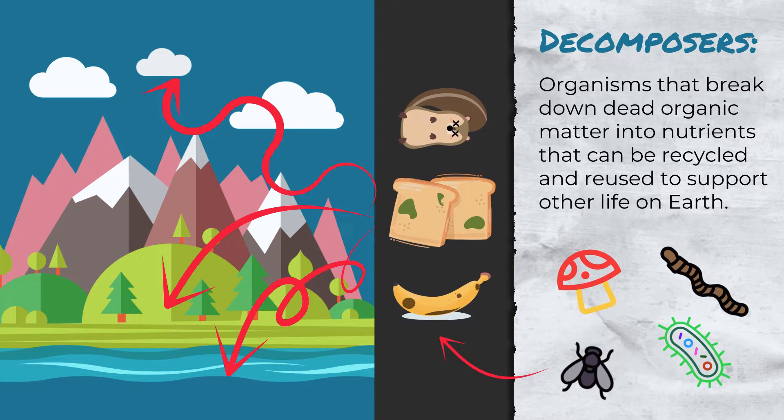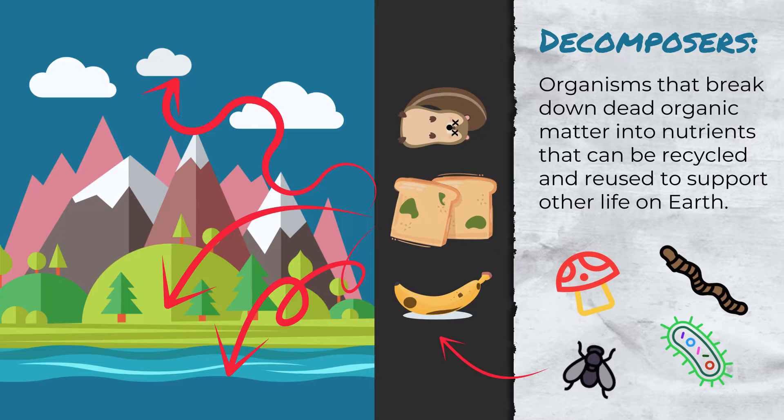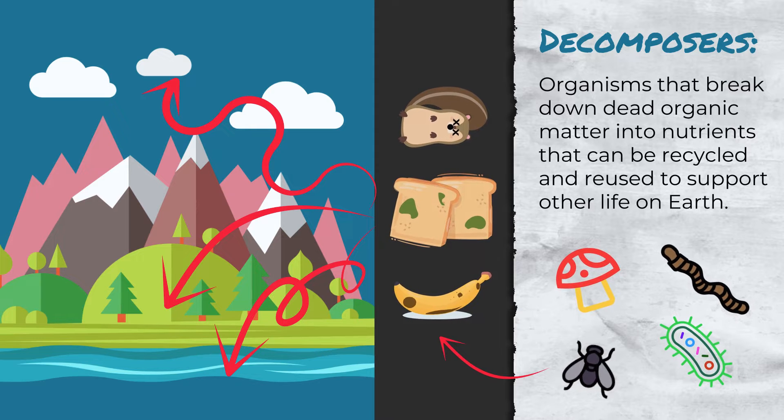If decomposers didn't do this, we would run out of nutrients on Earth and life would not be able to sustain as long as it could.